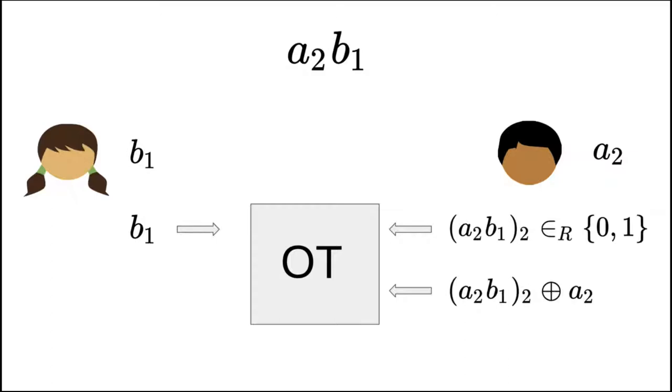Bob's second OT input is for the case that Alice holds 1 for B1. I repeat that in this case, the output shares must add to A2. Hence, Bob XORs his share of A2 B1 with A2 and inputs it to the OT. The OT protocol is then executed, and Alice receives her share of A2 B1.